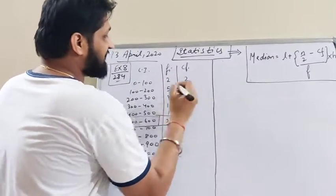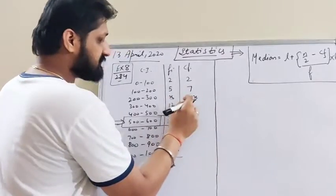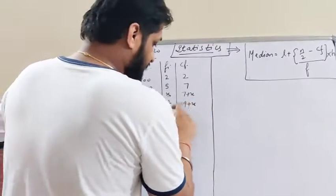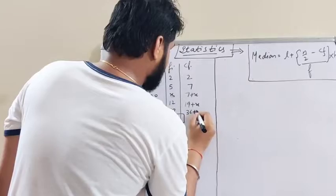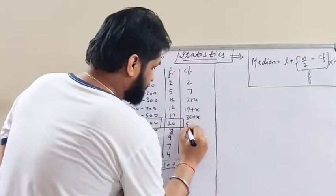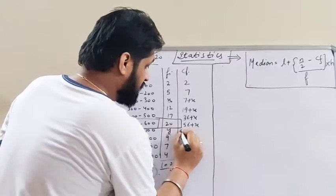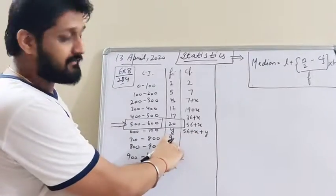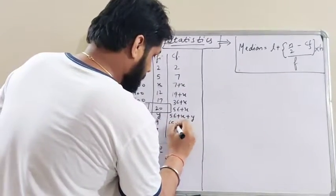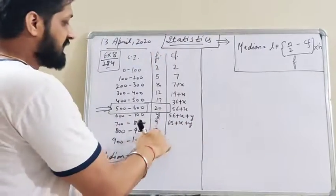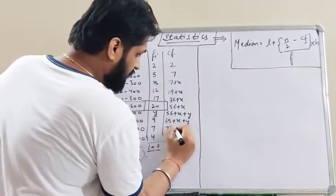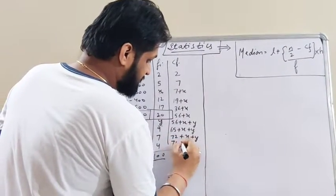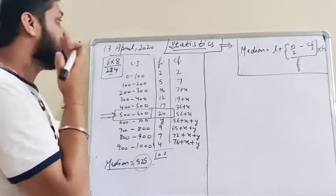The cumulative frequencies are: 2, then 2 plus 5 is 7, then 7 plus x gives 7 plus x, then adding 12 gives 19 plus x, then adding 17 gives 36 plus x, then adding 20 gives 56 plus x, then adding y gives 56 plus x plus y, then adding 5 gives 61 plus x plus y, adding 9 gives 65 plus x plus y, adding 7 gives 72 plus x plus y, and adding 4 gives 76 plus x plus y.